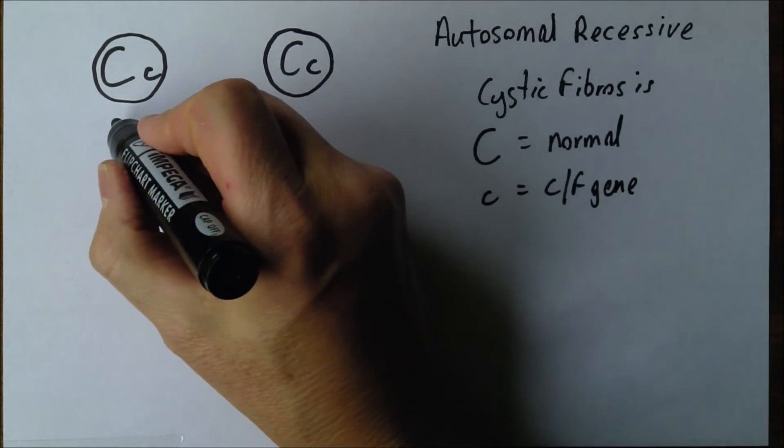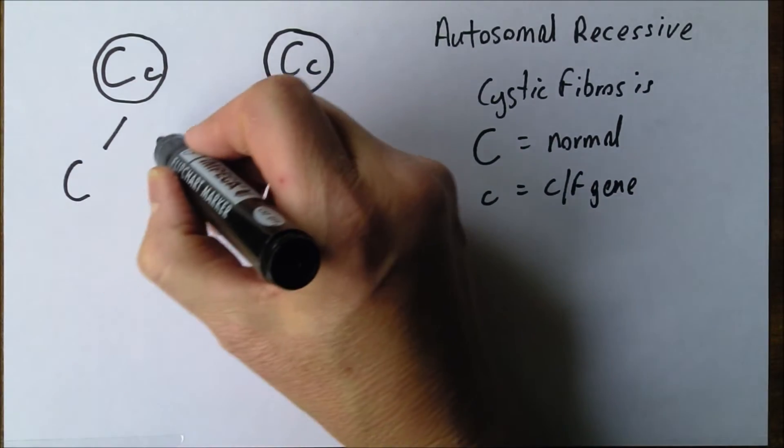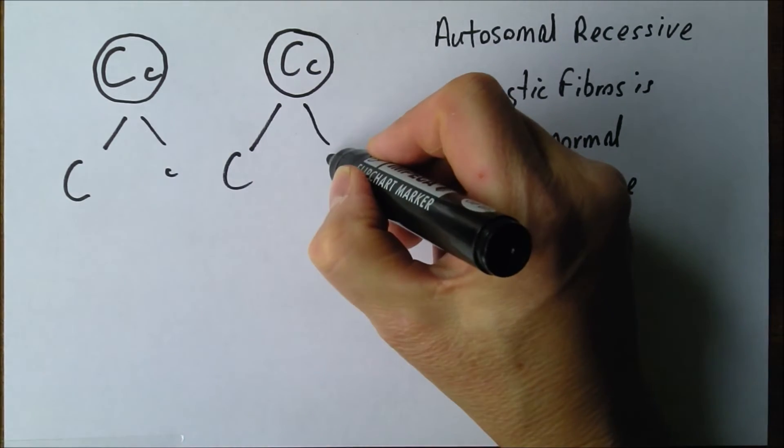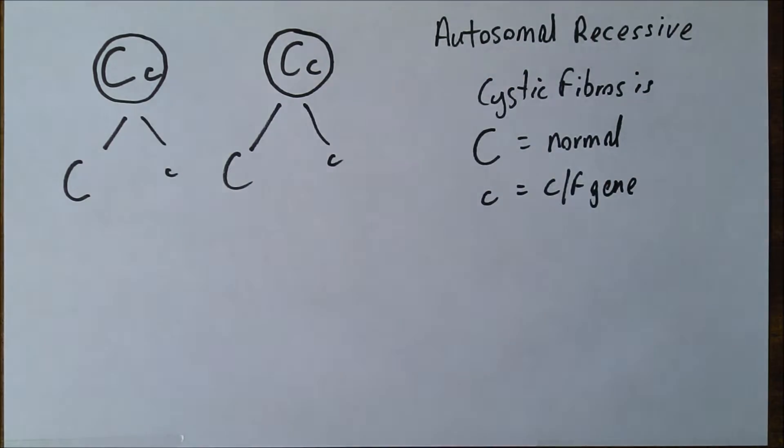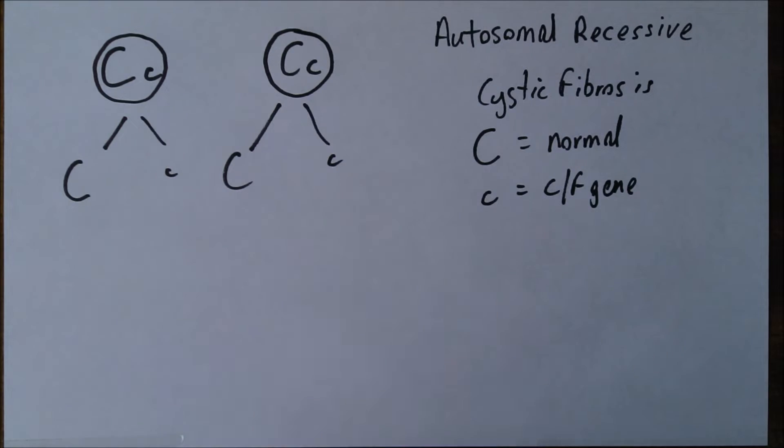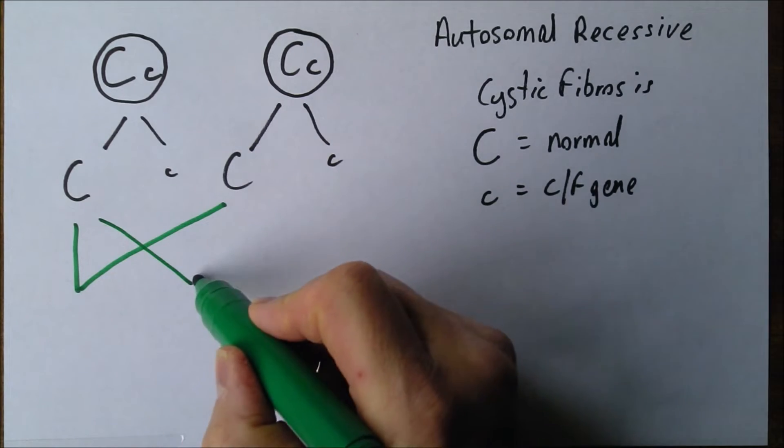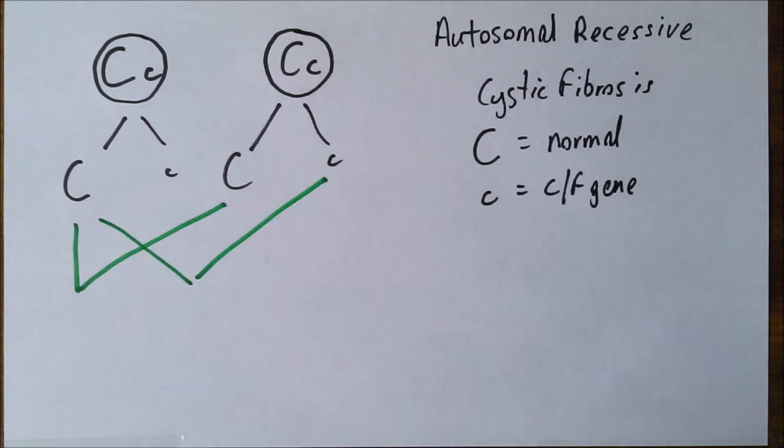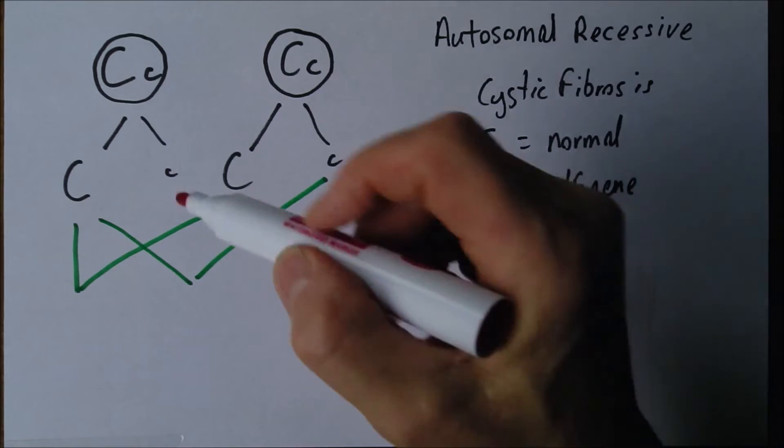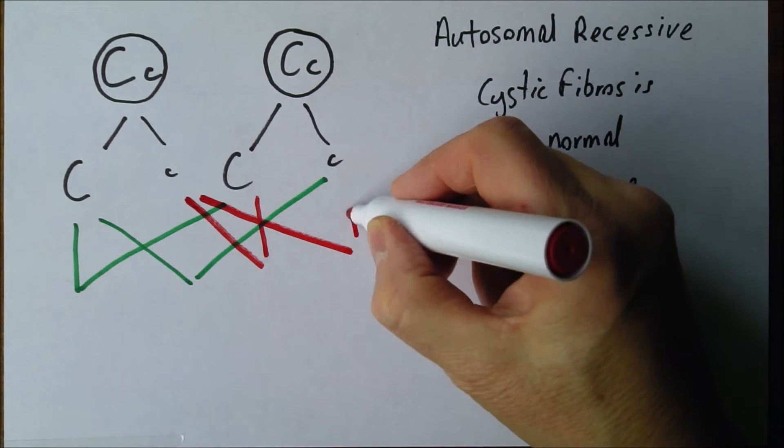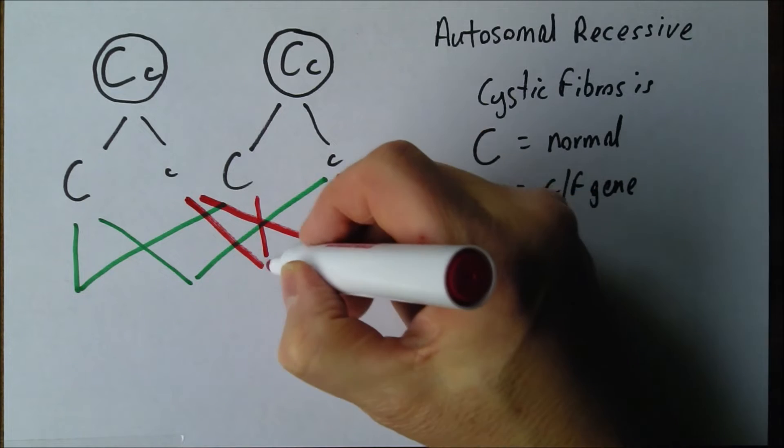Each parent produces gametes with C or c. These gametes recombine in the usual way - it could be this one with that one, or that one with that one. These are the possibilities.